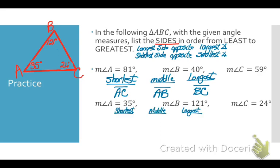Now let's switch the degree values. I highly recommend drawing and labeling a triangle. My smallest angle is 24 degrees, angle C, and opposite that is side AB — my shortest side. My largest angle is 121 degrees, which is angle B, and opposite that is side AC. The only side left is BC, so those are my sides listed from shortest to longest.